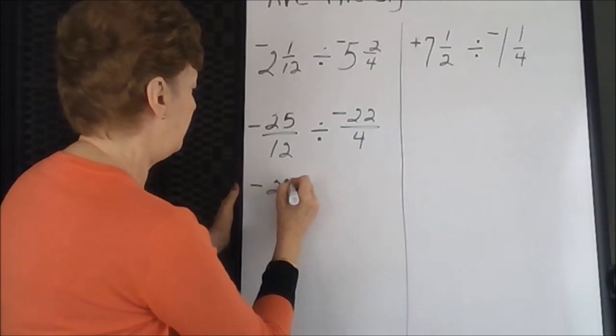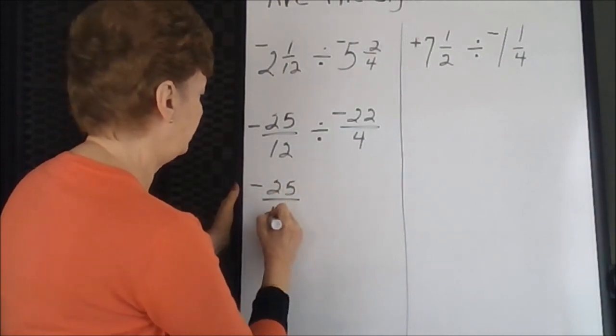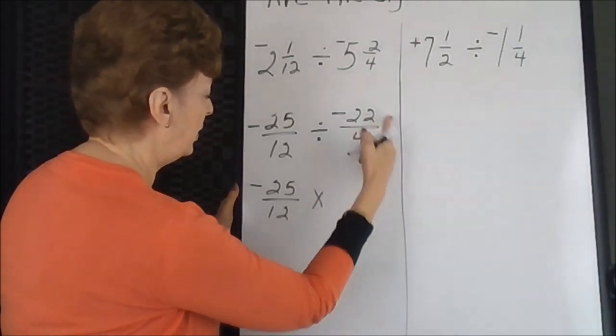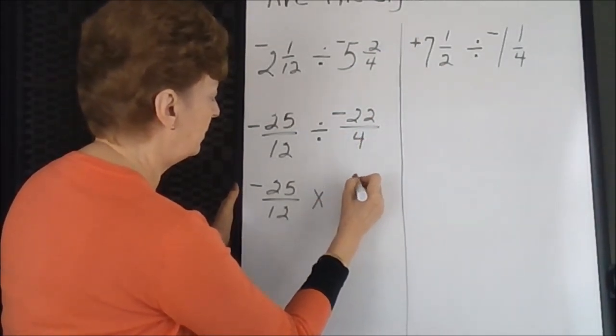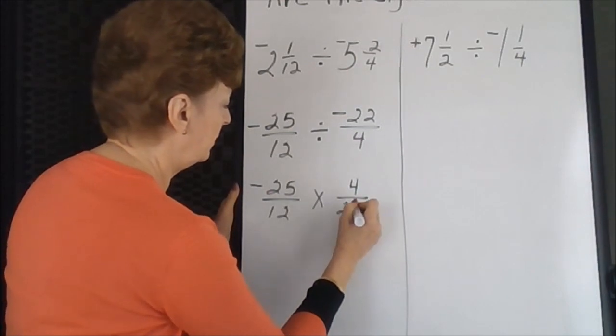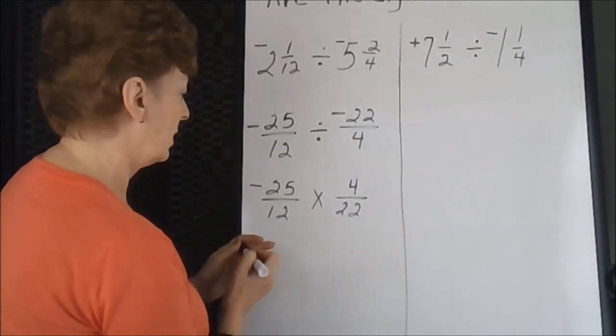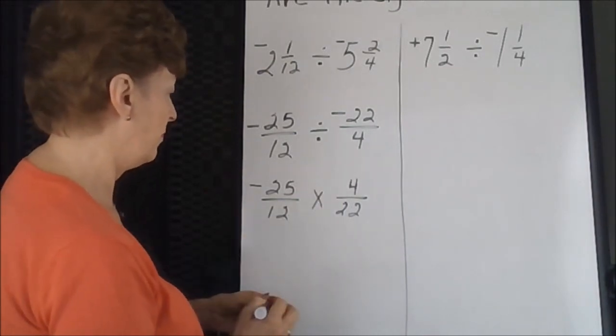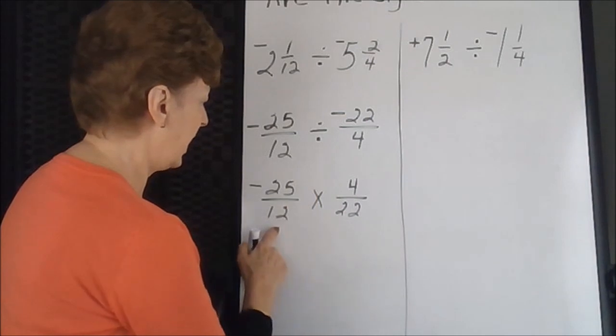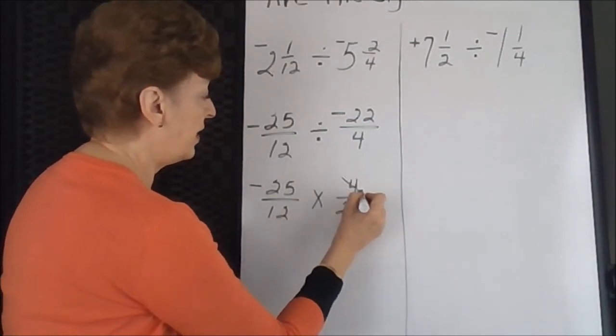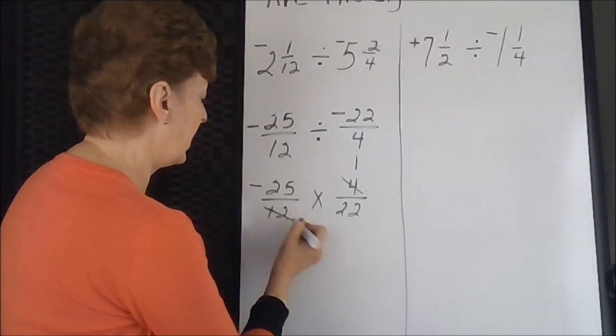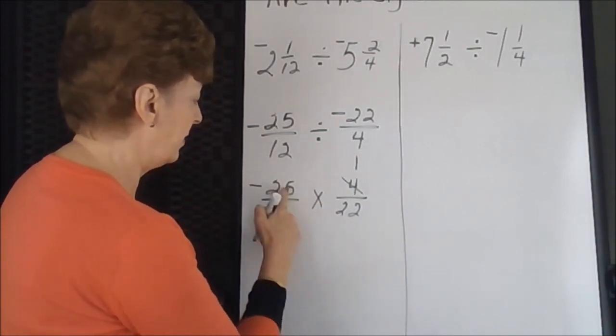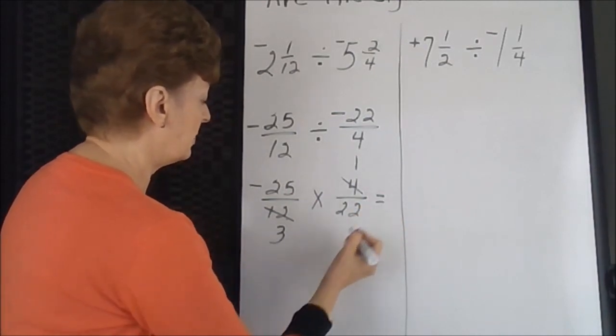Next step, keep the first fraction, change the operation to multiplication, use the reciprocal. Let's see if we can do any simplification. Here we can on this diagonal, 4 divides into itself one time, 4 divides into 12 three times. There isn't anything we can do on this diagonal, so we're ready to do our multiplication.